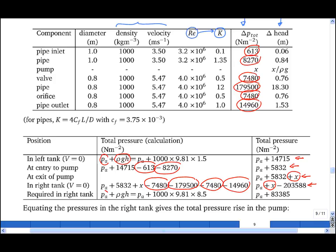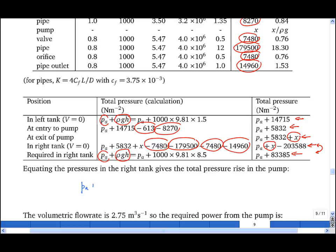However, we know that the total pressure there must be Pa plus rho gh, where h now is 8.5 meters. And so that's this value here. And now we solve for x by equating these two expressions. So we have Pa plus x minus 203,588 pascals is equal to Pa plus 83,385 pascals, which means that x is equal to 286,973 pascals.